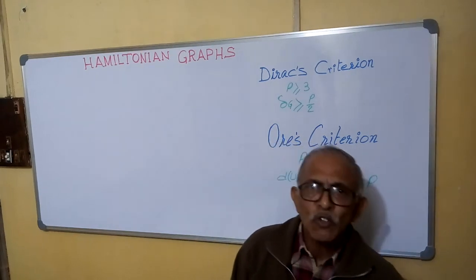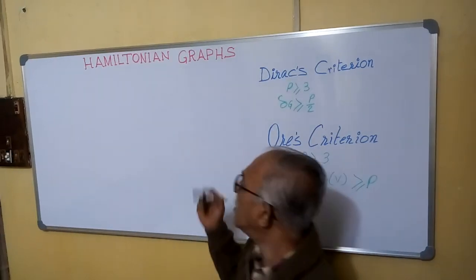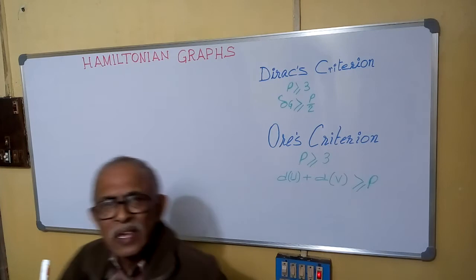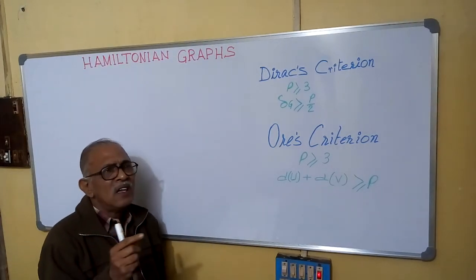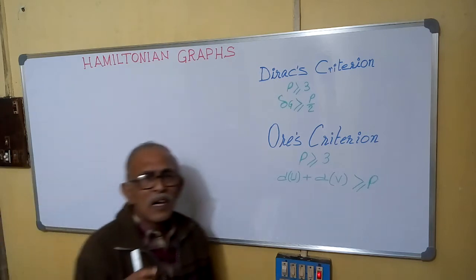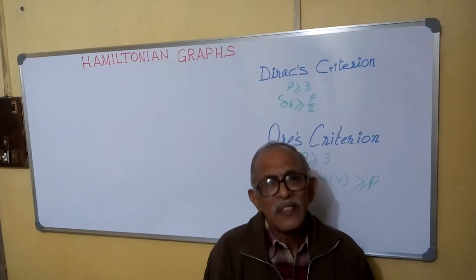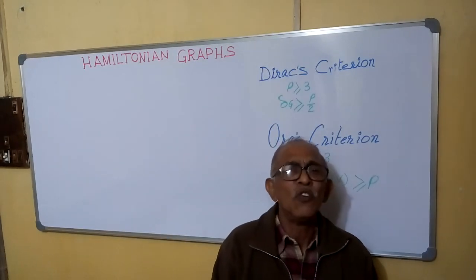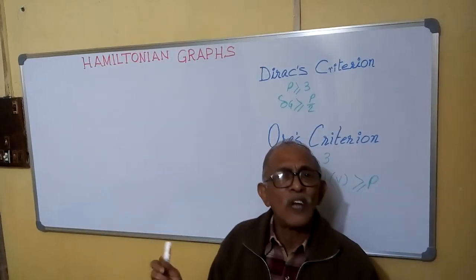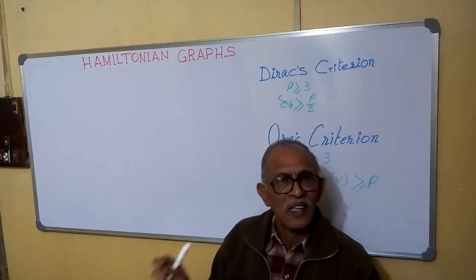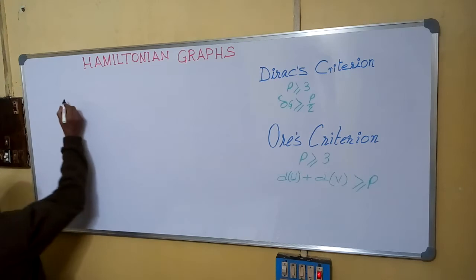Welcome. We are going to discuss Hamiltonian graphs. What is a Hamiltonian graph? If a cycle is there in a graph containing all the vertices of the graph, then that graph is known as a Hamiltonian graph, and the corresponding cycle is known as a Hamiltonian cycle.